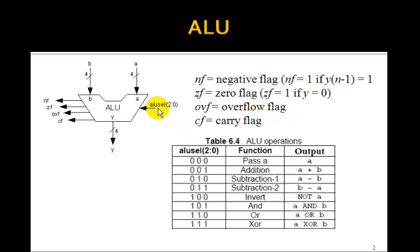So we'll have ALU select, sort of like a multiplexer select, two down to zero. And depending upon what this ALU select is, we'll have a different function.